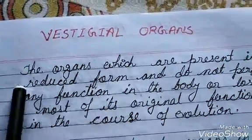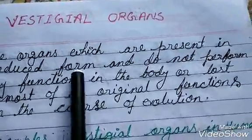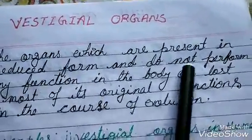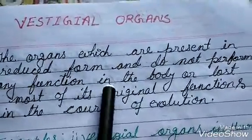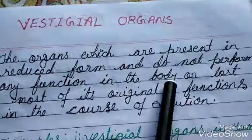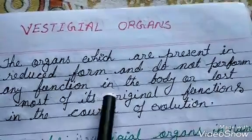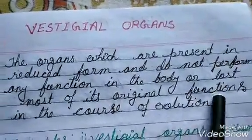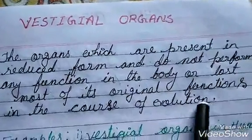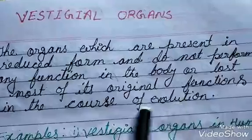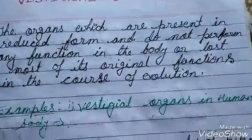Vestigial organs means the organs which are present in reduced form and do not perform any functions in the body, or have lost most of their original functions in the course of evolution. There are some examples of vestigial organs.